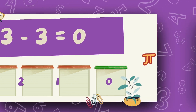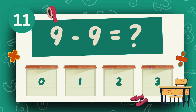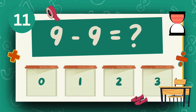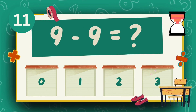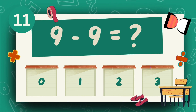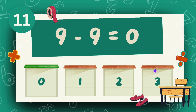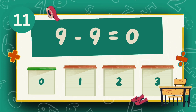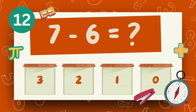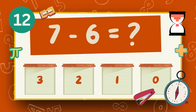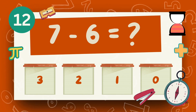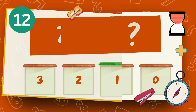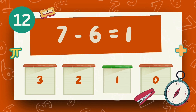What is 9 minus 9? The answer is 0. What is 7 minus 6? The answer is 0.